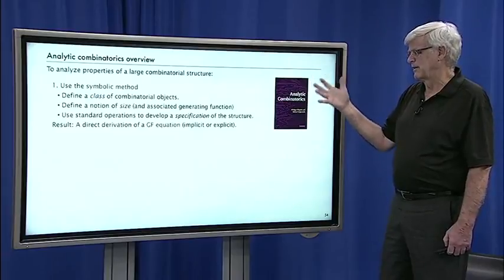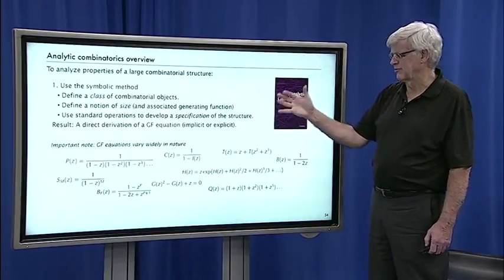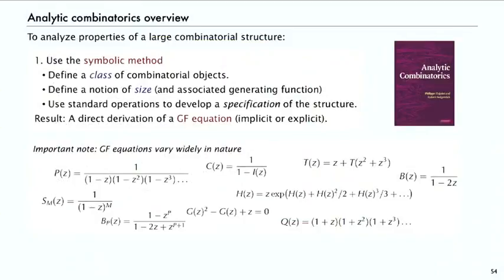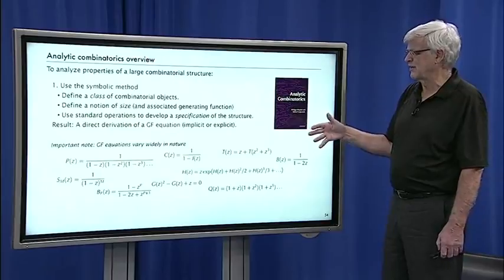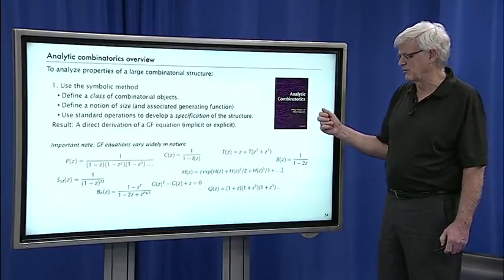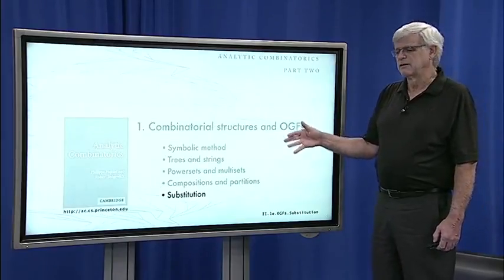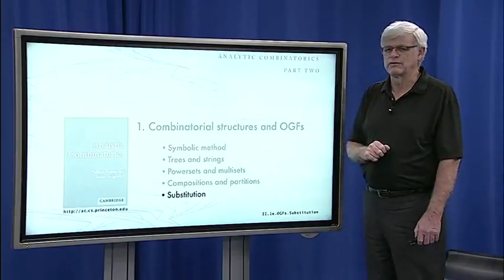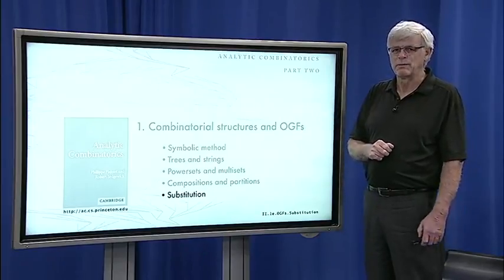Just to finish with the overview that I started with, we use the symbolic method to get generating functions. I want to point out that we get generating function equations that vary widely in nature. We have all these strange types of equations that arise when we use the symbolic method and many more. It's necessarily going to be a challenge to get coefficient asymptotics out of all these types of equations. That's for part two of the course. So that's just a look at another construction within the symbolic method and a comment on the various types of generating functions that we might derive.